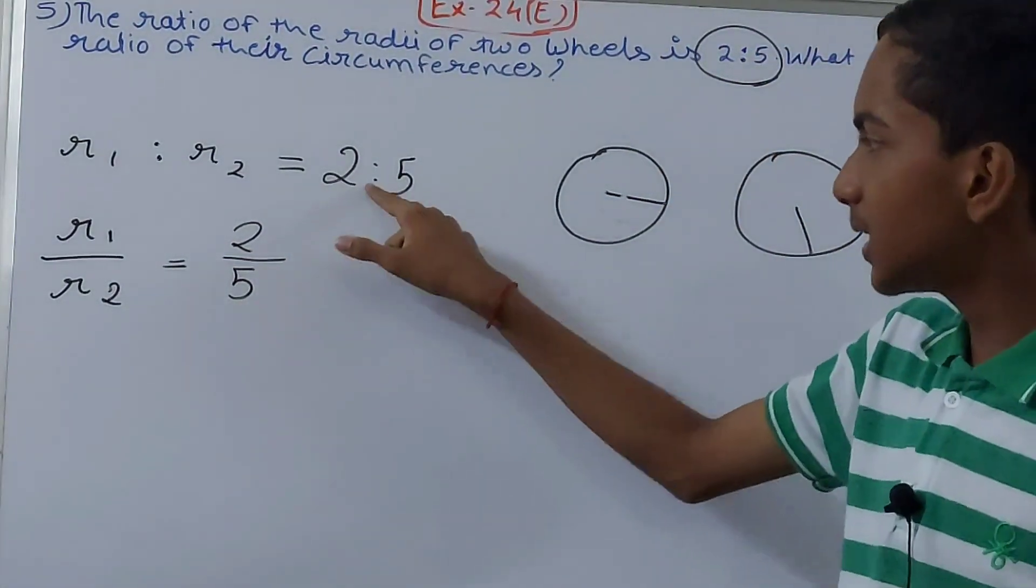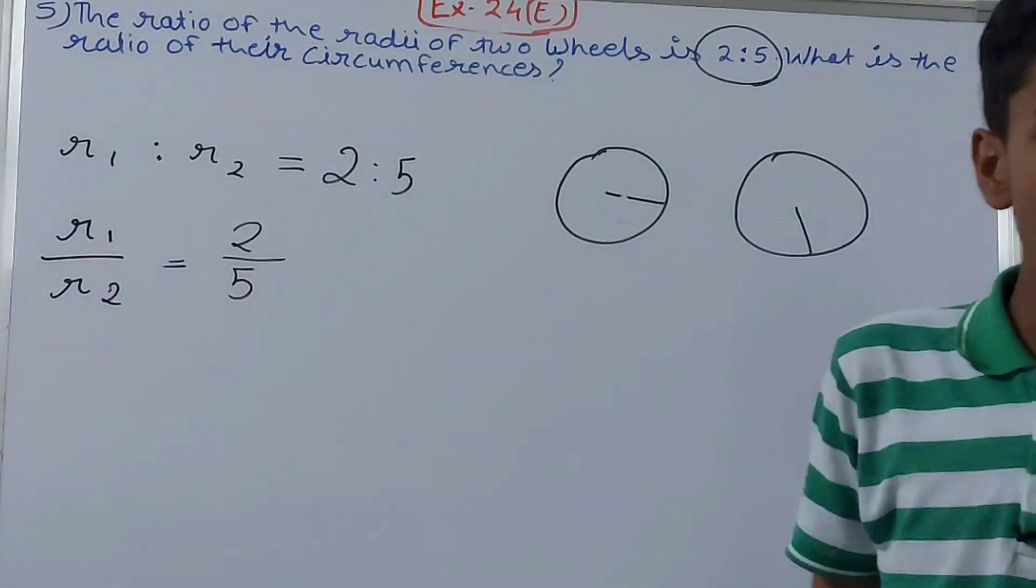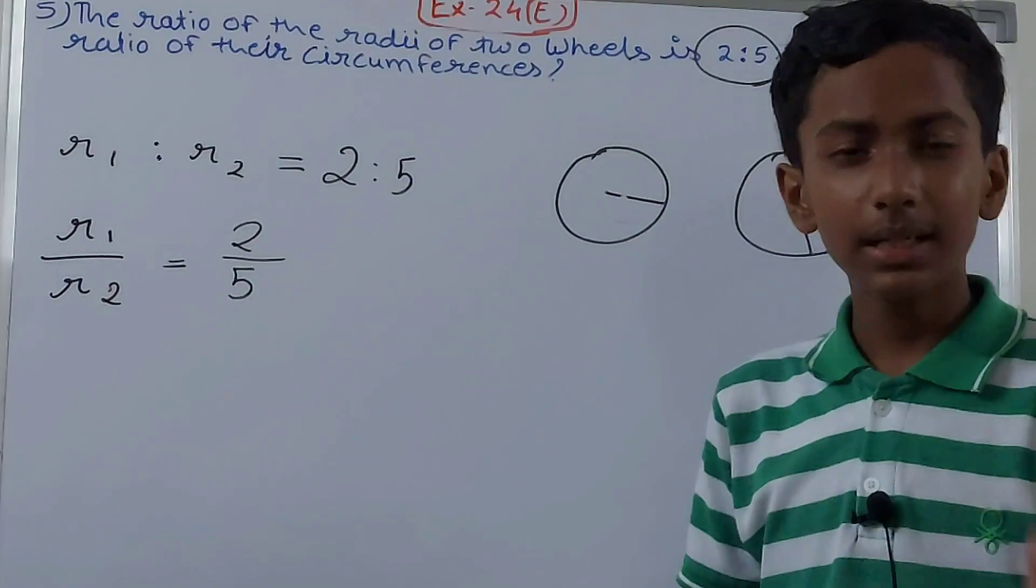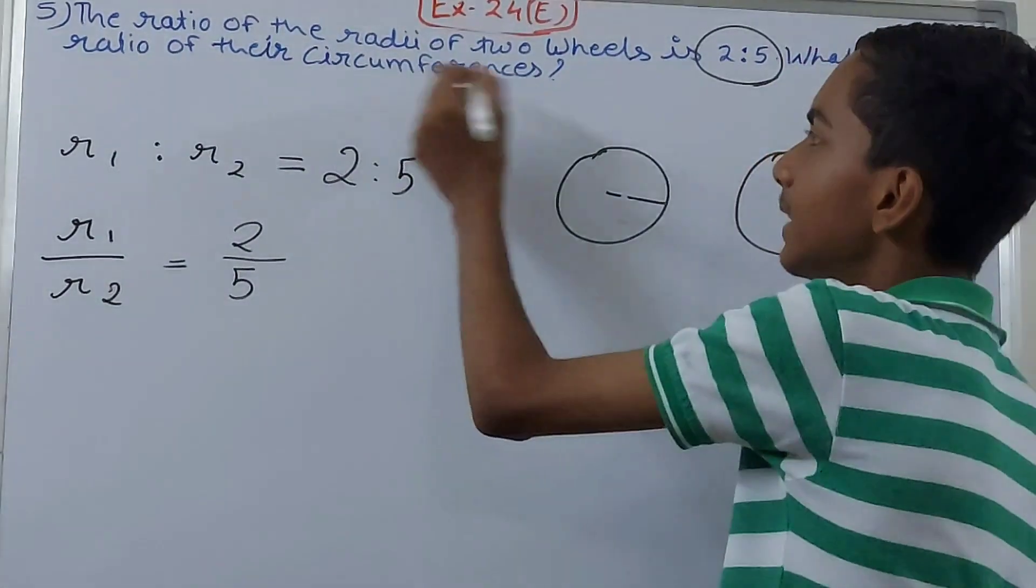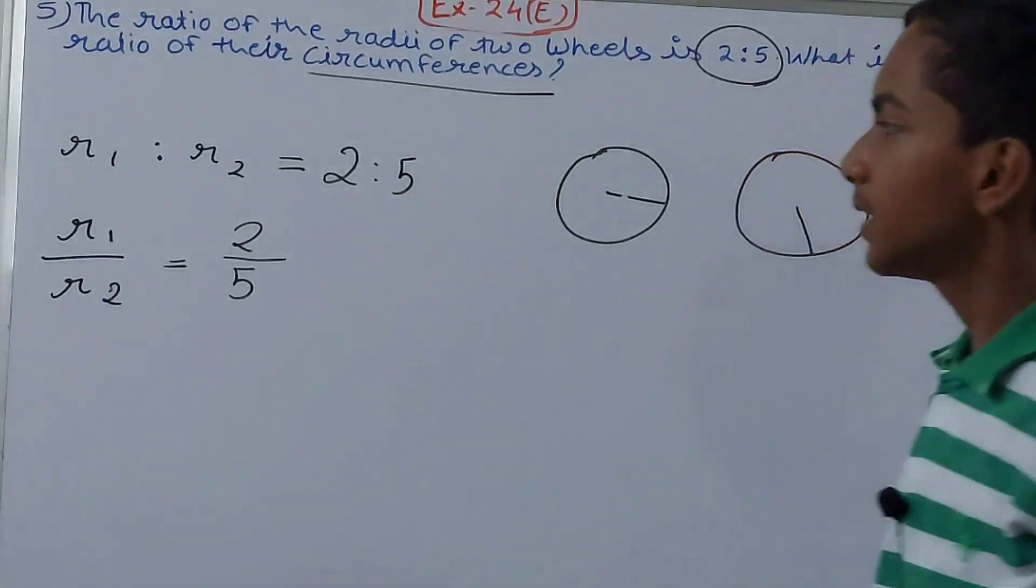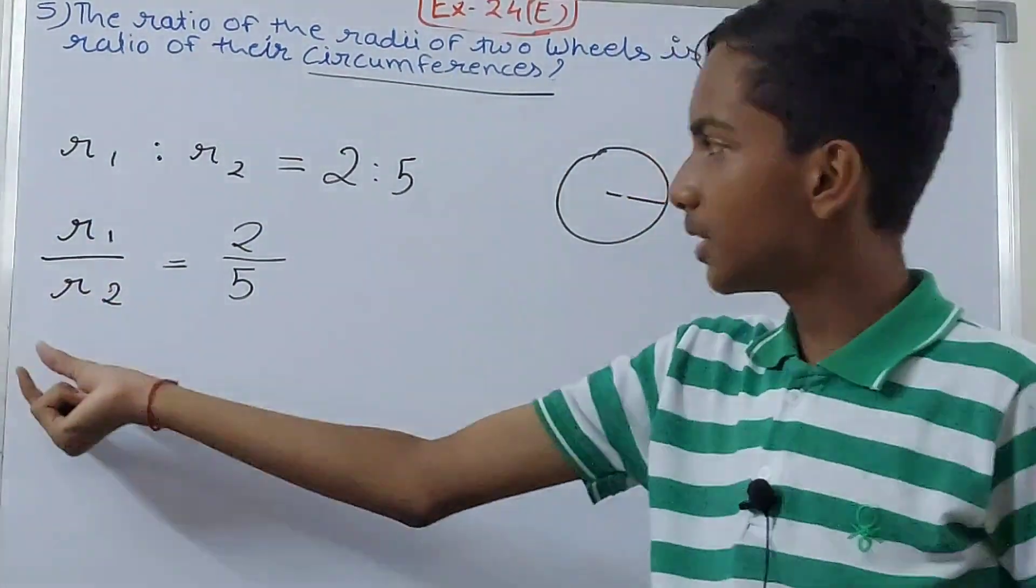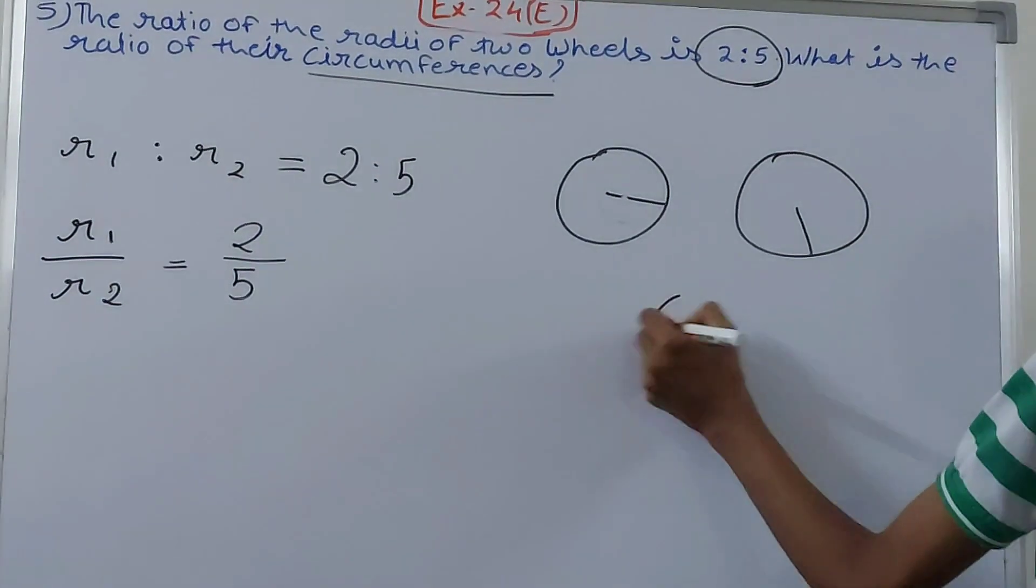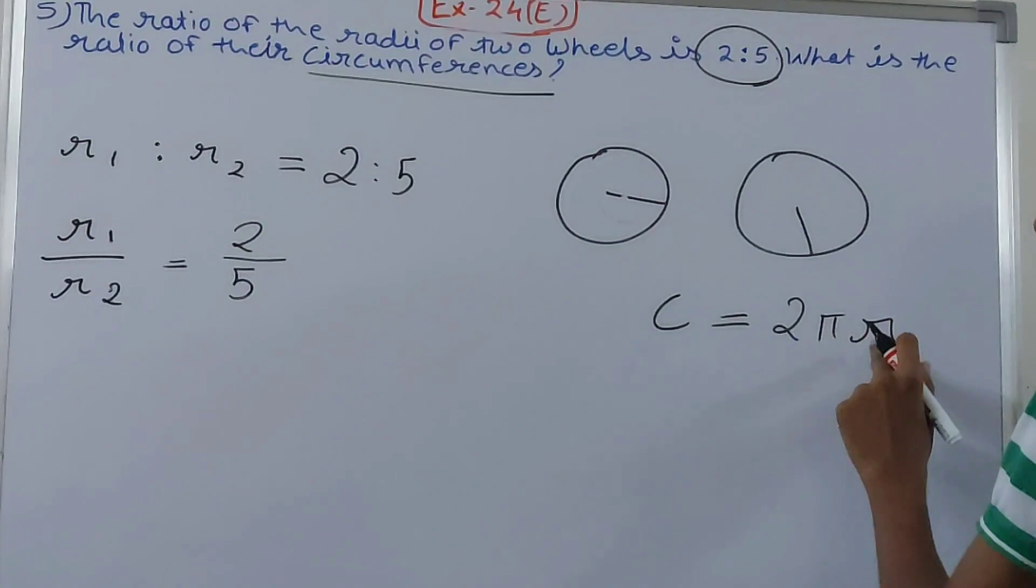Now here is what we need to think carefully. After this part, it's asking for the circumference, so convert this into circumference. We know circumference equals to 2πr if radius is given.